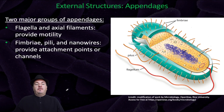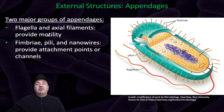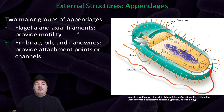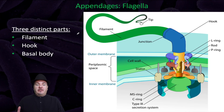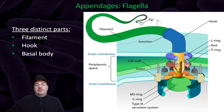The two major groups of appendages are the flagella and axial filaments, which provide motility — they allow the bacteria cell to move. And then the fimbriae, pili, and nanowires, which provide attachment points or channels for the bacteria. In regards to the flagella, the flagella is made up of three distinct parts: the filament, the hook, and then the basal body.